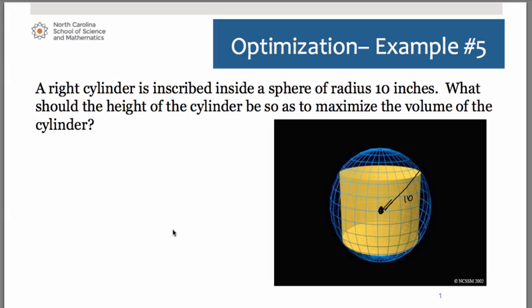So if we try to set forth what it is we want to maximize or minimize, obviously in this case we want to maximize volume. You need to remember how to get volume of a cylinder: it's pi r squared h. That's what we want to maximize.